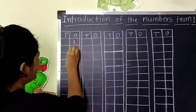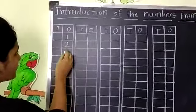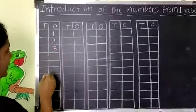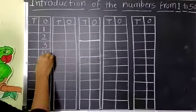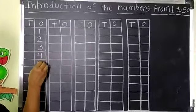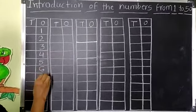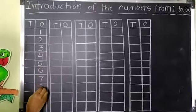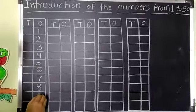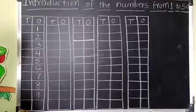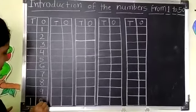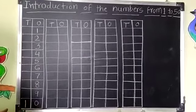1, 2, 3, 4, 5, 6, 7, 8, 9, 1, 0, 10. Okay?